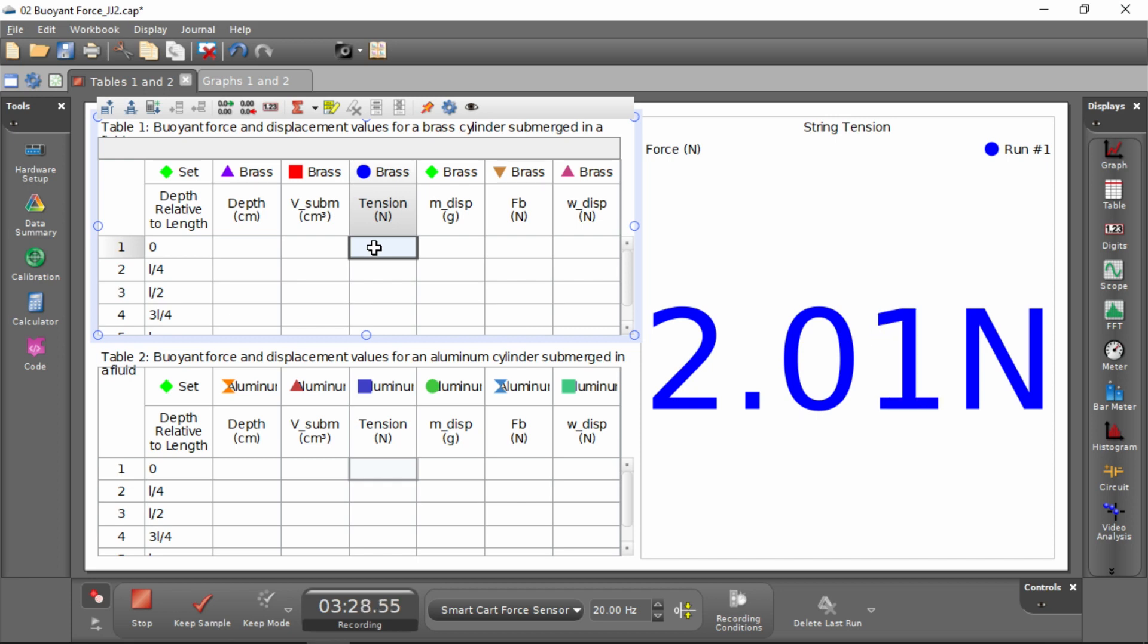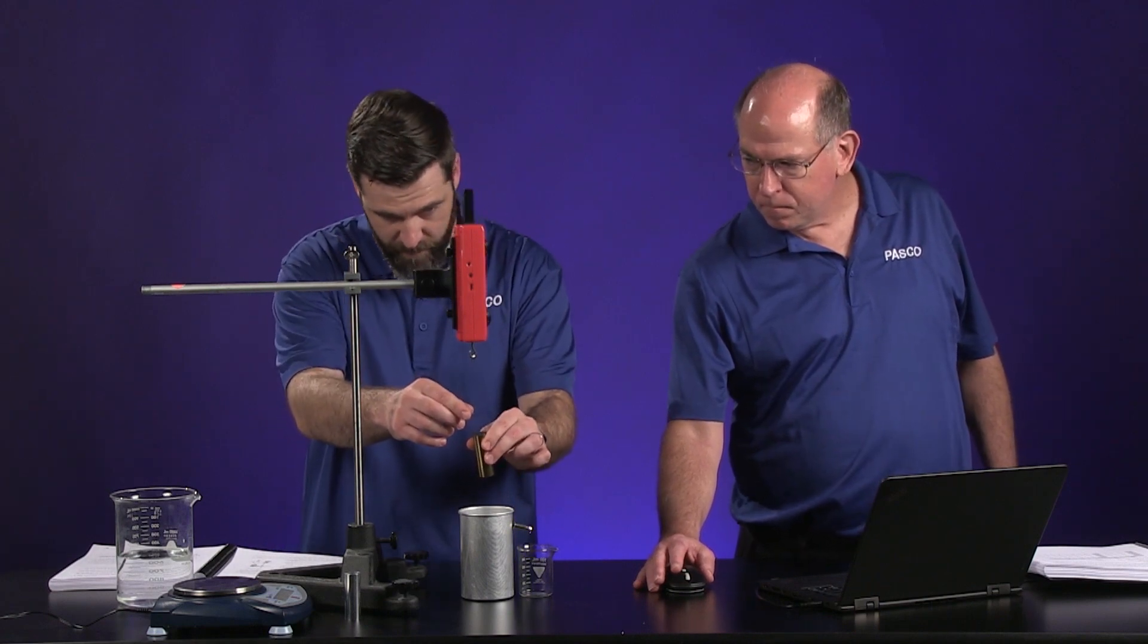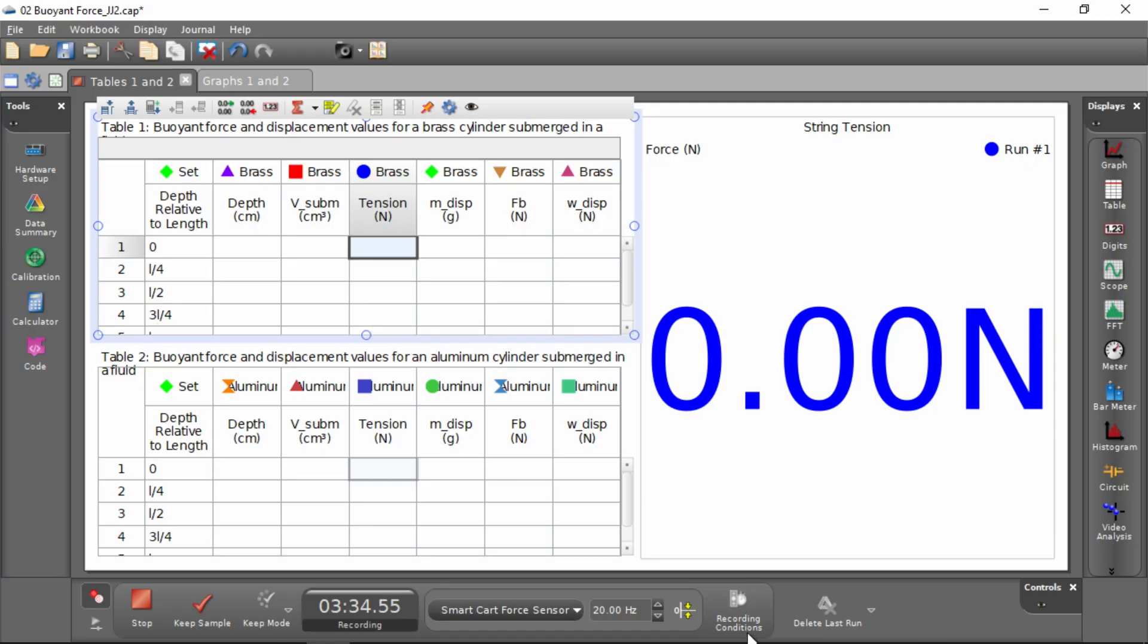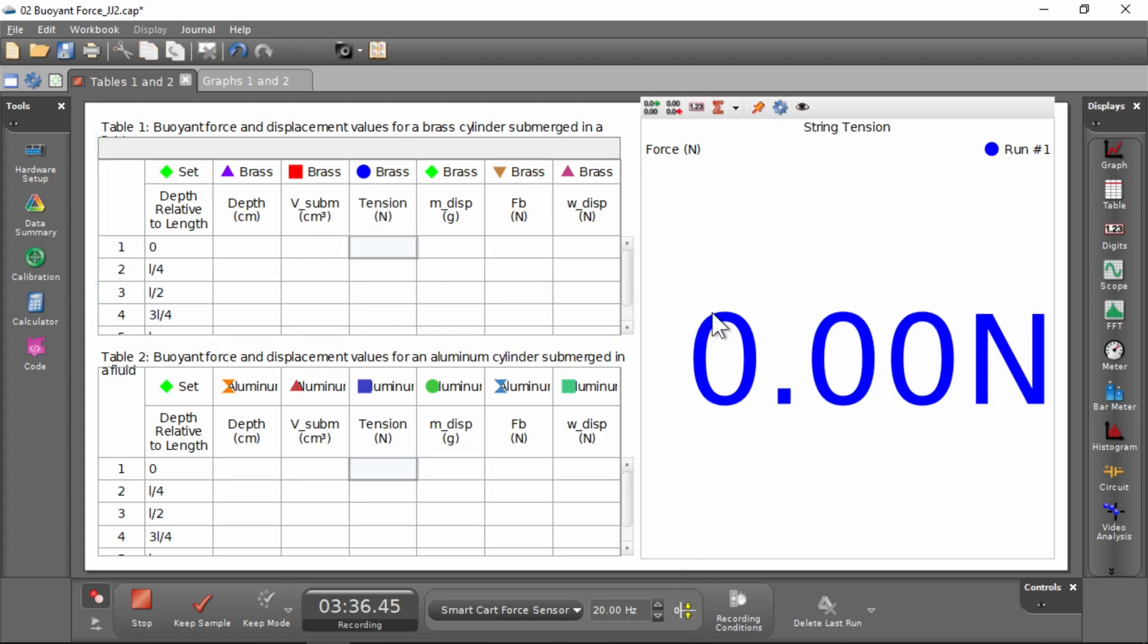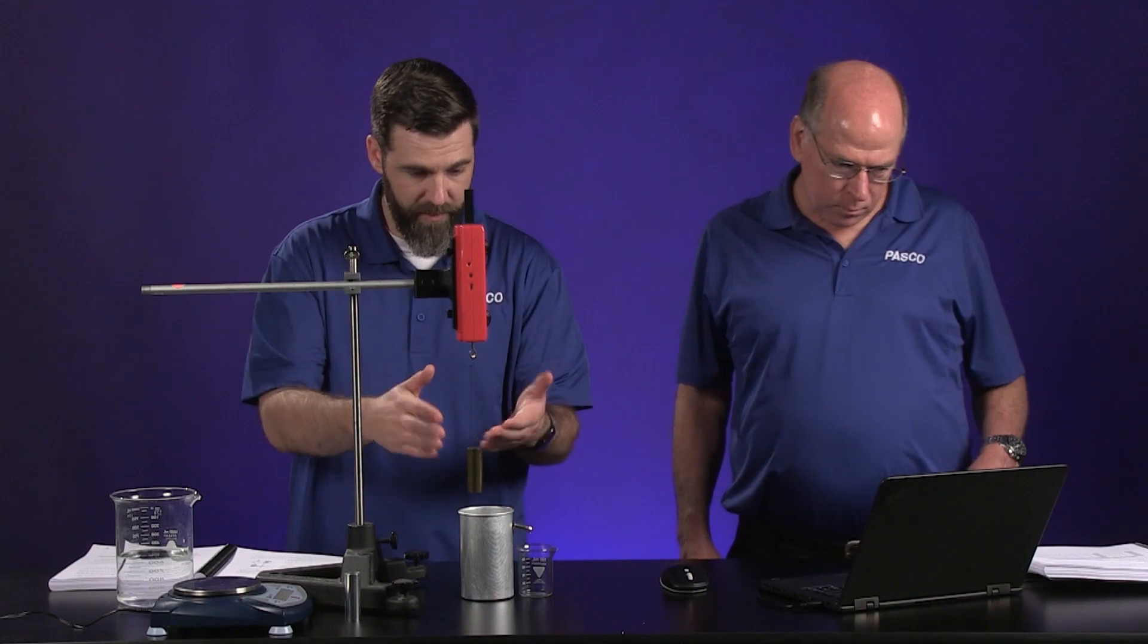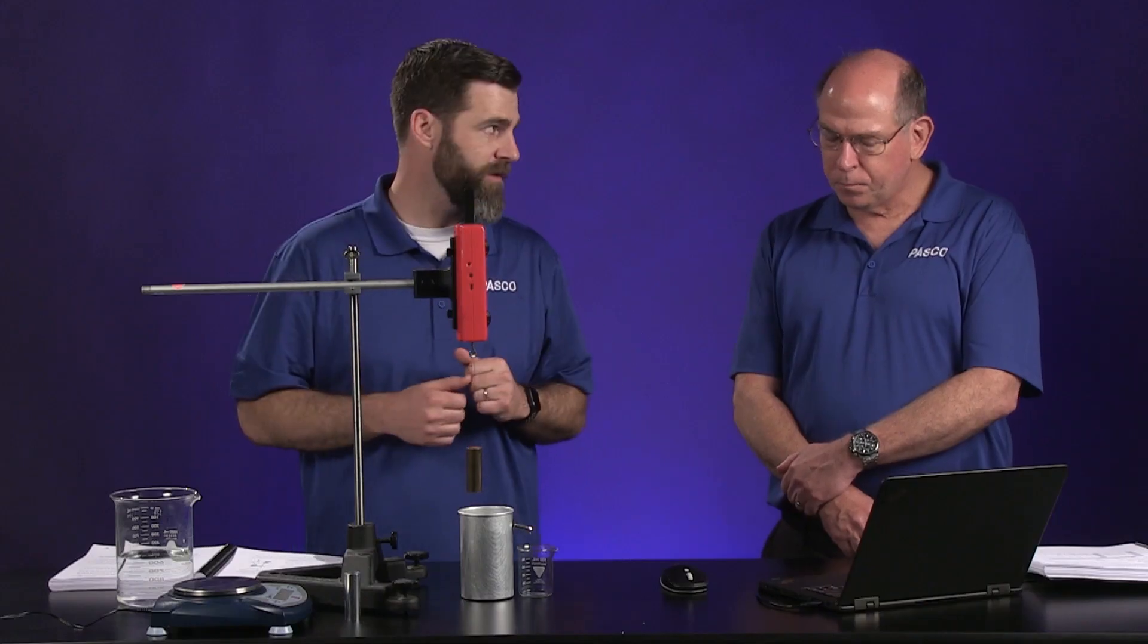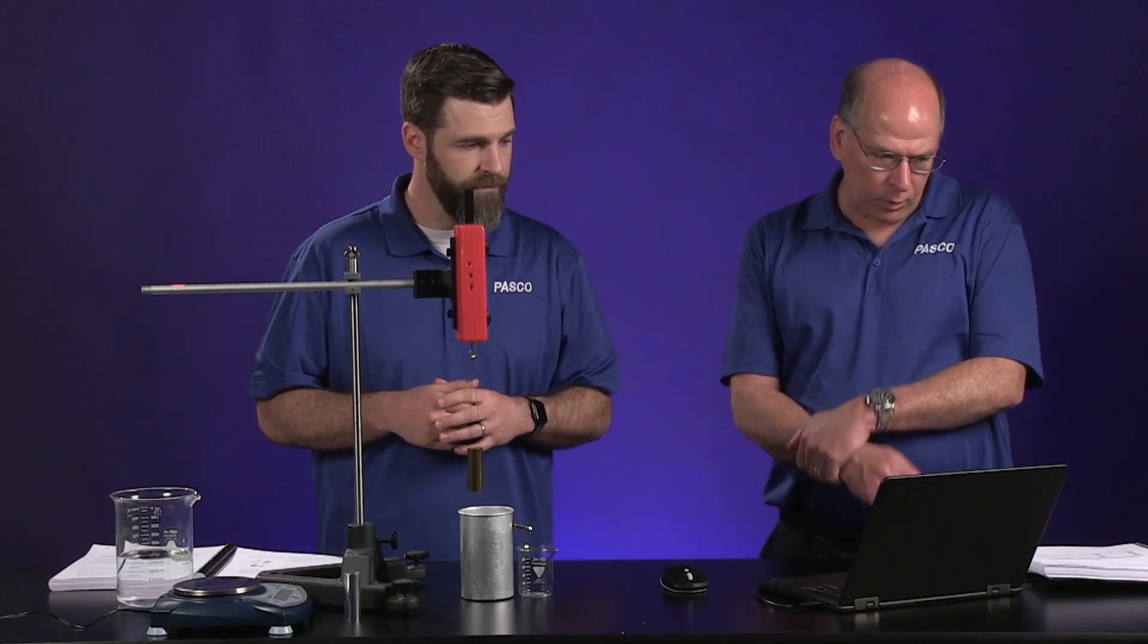I need to record what the tension is right now. It's 2.01. We should make sure it's zero when that's not on it. So in this experiment, the first thing we want to do is make sure we zero our force sensor while nothing's there. It's zero, so we're pretty good there. And again, that tension that it's measuring is the weight of that brass cylinder. I'll enter that. That value on the right side of your screen is a live reading from the sensor, and that tells you the tension in the string.